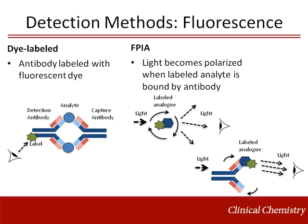For final detection, a wide variety of immunoassay detection methods are currently used in the clinical laboratory, including fluorescence, chemiluminescence, radioactivity, and enzyme-based detection. Fluorescence detection uses a labeled antibody directed against an analyte of interest, with the amount of detected fluorescence proportional to the amount of analyte in the sample.